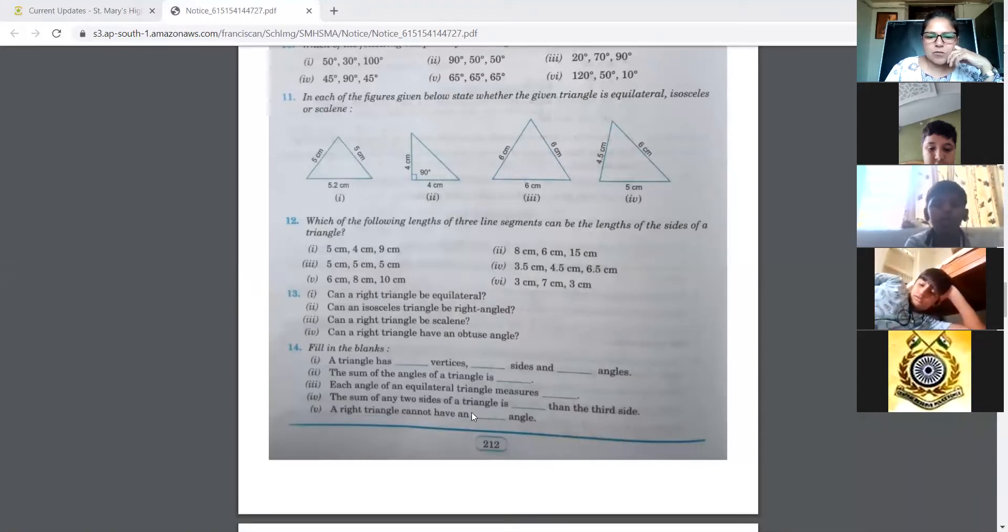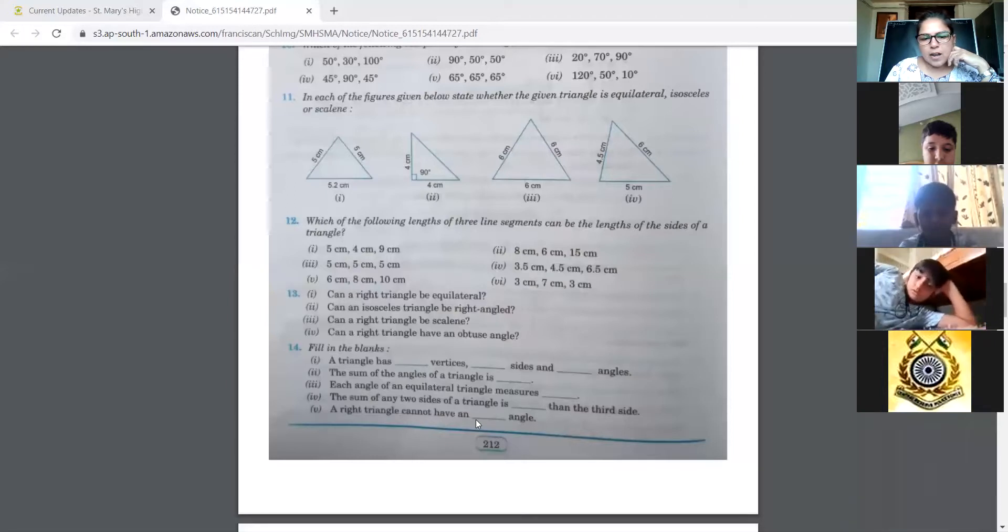The sum of any two sides of a triangle is dash than the third side. This is an important property which you need to know. A right triangle cannot have an dash angle. This also we just did in the previous question.